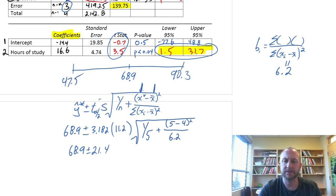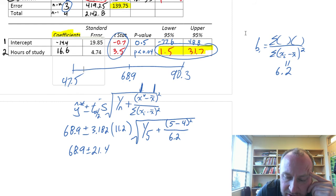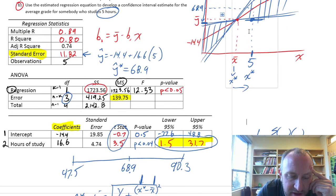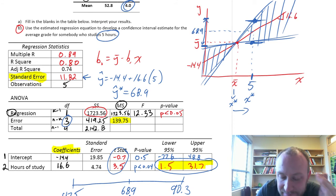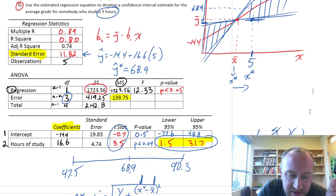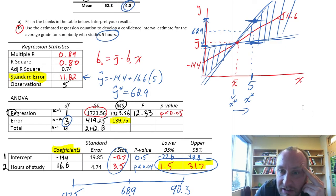Well, there we go. We've got our confidence interval estimate for the average grade for somebody who studies five hours a week. So, what we can pull from this, let's look at a few things as far as our interpretation of this regression.